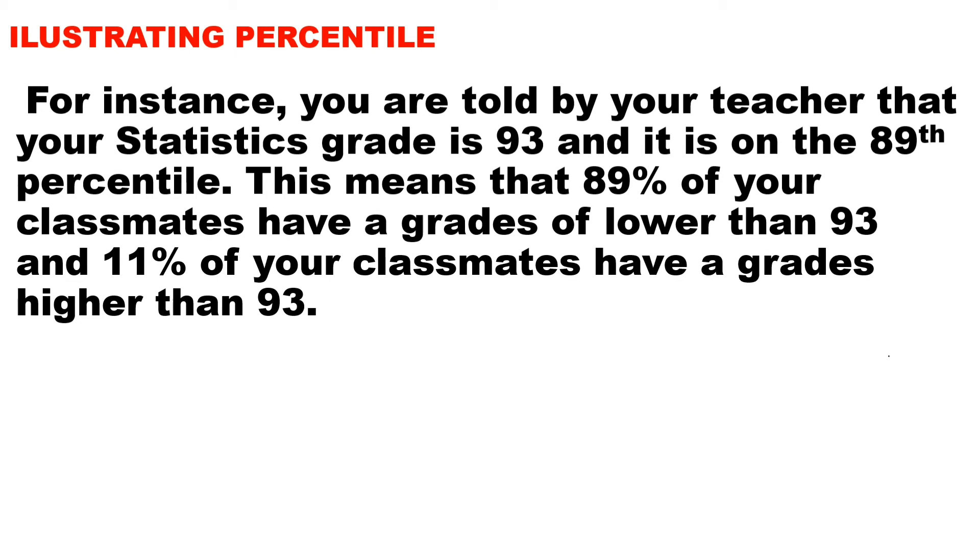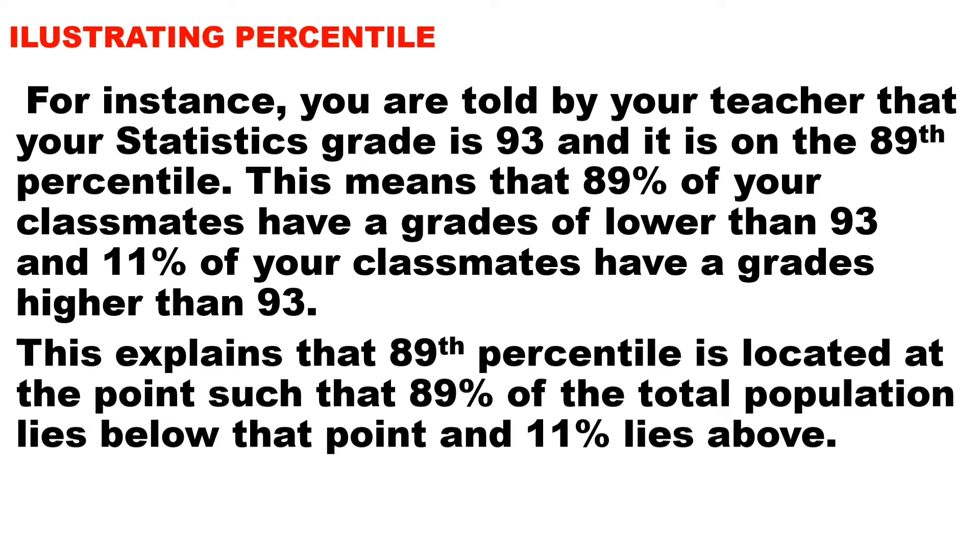For instance, you are told by your teacher that your statistics grade is 93 and it is on the 89th percentile. This means that 89% of your classmates have a grade lower than 93 and 11% of your classmates have a grade higher than 93. This explains that the 89th percentile is located at the point such that 89% of the total population lies below that point and 11% lies above.